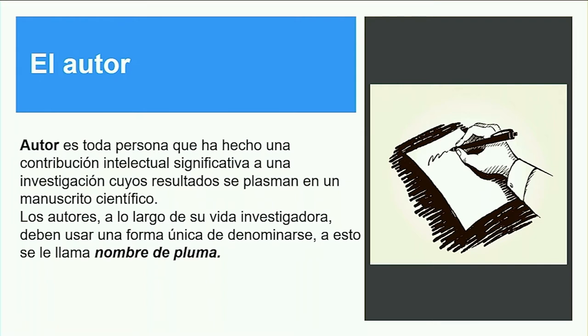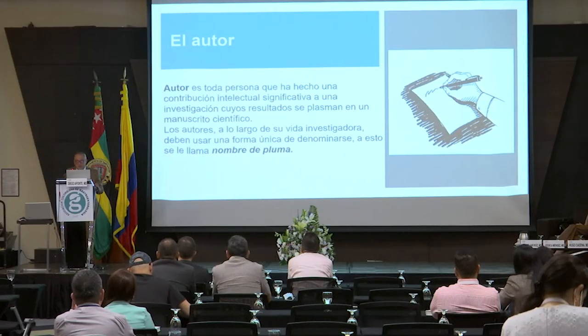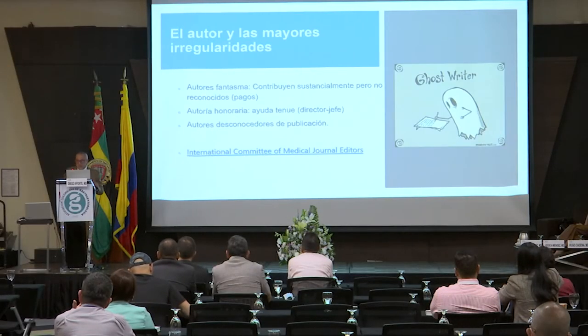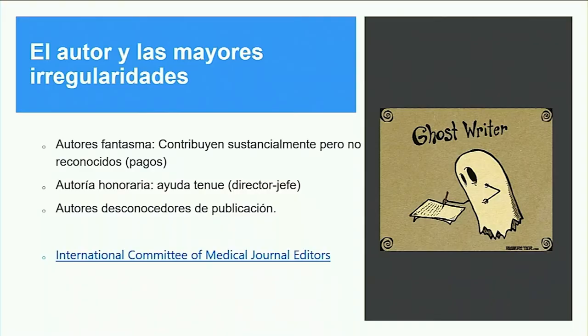Un autor es toda persona que ha hecho una contribución intelectual significativa a una investigación cuyos resultados se plasman en un manuscrito científico. Y la primera enseñanza es el nombre de pluma. No es lo mismo publicar como Diego Aponte, Diego Mauricio Aponte o Diego Aponte Martín. El nombre de pluma es aquel nombre con el cual llevamos todas nuestras investigaciones, y esto es bien importante para la hoja de vida investigativa.